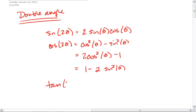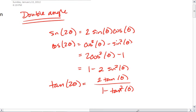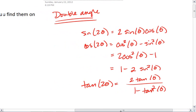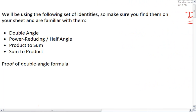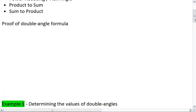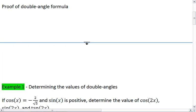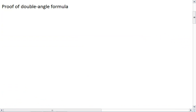And tangent of 2 theta equals 2 times tangent of theta over 1 minus tangent squared theta. So take a moment, make sure you are familiar with these. And there's actually a pretty simple proof for where these double angle formulas come from. Let's look at sine first.